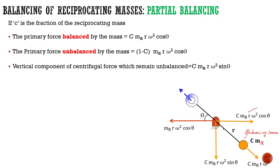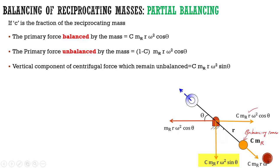By adding this balancing mass, we have got two components: c·mr·r·ω²·cosθ and c·mr·r·ω²·sinθ. This much amount of unbalanced force is balanced — that is c·mr·r·ω²·cosθ. The value (1 - c)·mr·r·ω²·cosθ remains unbalanced in the horizontal direction. In the vertical component, the entire value remains unbalanced, that is c·mr·r·ω²·sinθ.